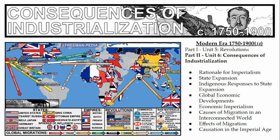In Unit 5, which we did last week, that was primarily on the Atlantic revolutions — the revolutions that occur in states that border the Atlantic. So that would be the American, the French, the Haitian, and all the various Latin American revolutions pictured on the map here. Unit 6 is the same time period but more about the consequences of one of those Unit 5 revolutions: the industrial revolution. Think of Unit 5 as the cause and Unit 6 as the effect of this new mechanization of labor.